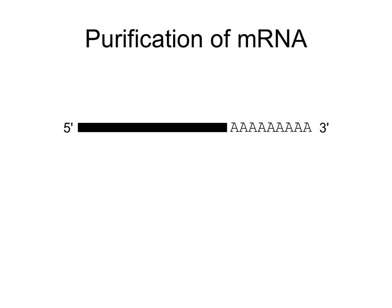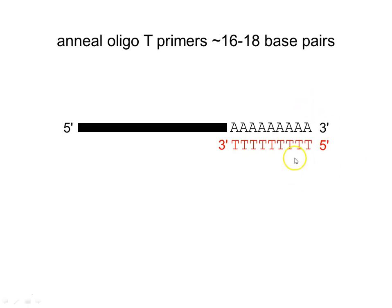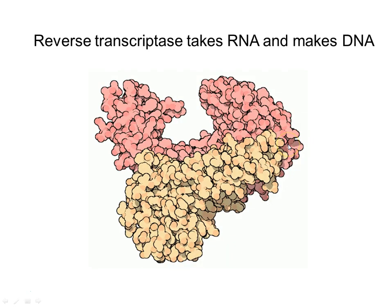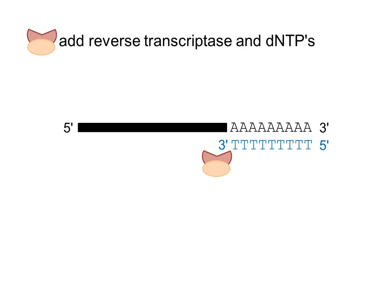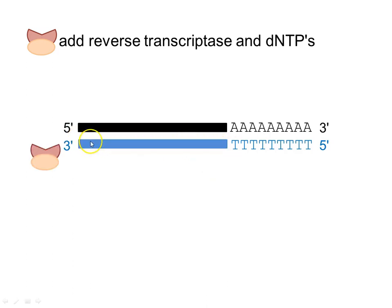We start creating our cDNA by annealing an oligo-T primer to the poly-A tail of the messenger RNA. This primer is a long stretch of T's that base pair with the A's, and only this will occur with the messenger RNA. We then use a rather remarkable enzyme called reverse transcriptase. Reverse transcriptase is a viral enzyme that the virus uses to convert its RNA genome to DNA, so it can take RNA and convert it back to DNA. The primer anneals to the poly-A tail, and reverse transcriptase fills in and copies through complementary base pairing, creating a DNA strand complementary to the RNA strand.